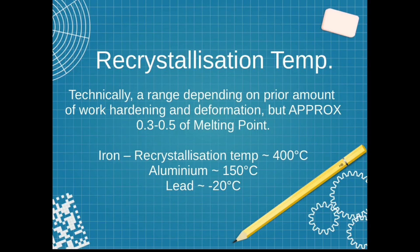In practical terms, iron recrystallizes at about 350 to 400 degrees. Above 400 degrees, the atoms in iron restore themselves to equilibrium and work hardening no longer exists.